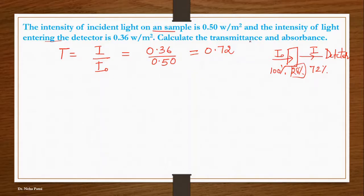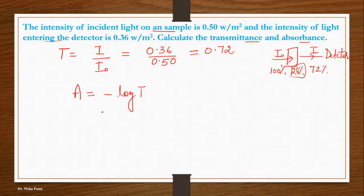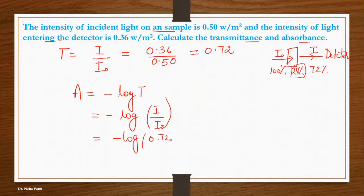Now your aim is to calculate both the transmittance and the absorbance. Transmittance has just been calculated as T = 0.72. For absorbance, recall that absorbance and transmittance are related by A = −log(T) = log(I₀/I). Substituting T = 0.72 gives an absorbance of 0.1427. This is how you calculate both transmittance and absorbance from given light intensities.